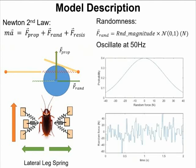In the simulation, I generated the random force from the normal distribution and oscillated at 50 Hz, basically using a constant magnitude times a Gaussian random number, and it will behave like this.